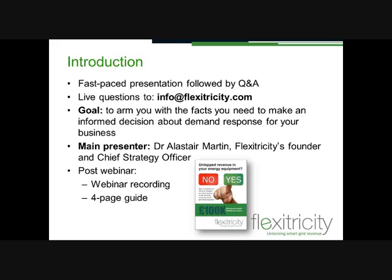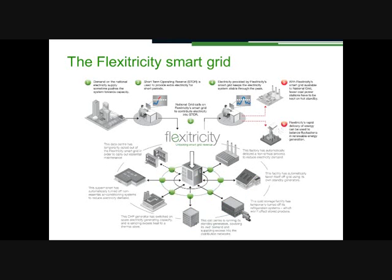Thank you very much Phil. This is a fairly quick gallop through the way that we work in Flexibility and the way that revenue is obtained from demand response services. Looking at the top left of this graphic, we're trying to represent the national electricity system — a demand peak that perhaps hasn't been adequately forecast, or possibly a power station failure that wasn't expected. That takes you to blob two: the system operator, the transmission system operator, i.e. National Grid, who suddenly realizes there's a situation that has to be dealt with rapidly.